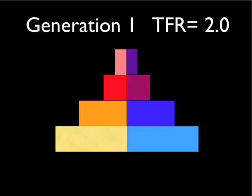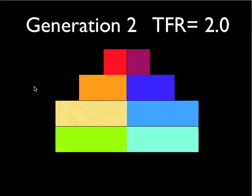Now, we go forward a generation, and everybody in this generation has decided they're just going to replace themselves. So one generation forward, the population looks like this. These folks have moved up. Here's their kids — same number. They've just replaced themselves.